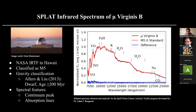This is also a spectrum of Mu Virginis B, but the wavelength range is very much longer — that means we are now looking into the infrared spectrum, the light that we can't see. This spectrum was obtained by the SpeX spectrograph at the NASA Infrared Telescope Facility in Hawaii. I analyzed it using the SpeX PRISM Library Analysis Toolkit program developed by Dr. Adam Burgasser. I classified this spectrum and the spectrum of best fit turned out to be an M5 type standard — a really good fit because you can barely see the black spectrum that belongs to Mu Virginis B.